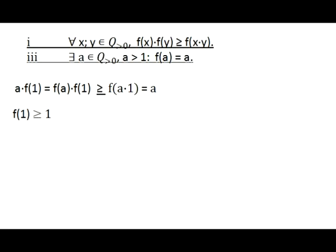The first fact we want to prove is based on conditions 1 and 3. The first equality follows from condition 3: A times F of 1 equals F of A times F of 1. From condition 1 it follows that F of A times F of 1 is not less than F of A times 1, and from condition 3 that last expression equals A. Dividing both sides by A, we get that F of 1 is not less than 1.